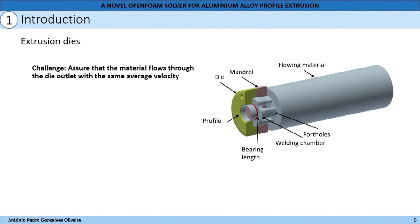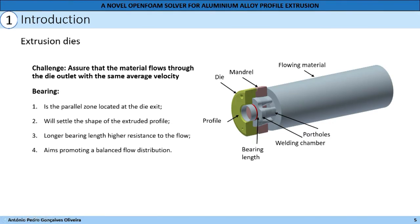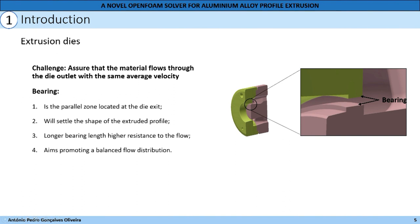The bearing length is one important region in the extrusion die. It is the parallel zone located at the die exits. It settles the shape of the extruded profile. The longer the bearing length, the higher the resistance to the flow, and it aims to promote a balanced flow distribution by changing its length in different regions, since it allows adjusting the local restriction to the flow and controlling the flow distribution. Here we can see a closer look at the bearing in the mandrel and die components.